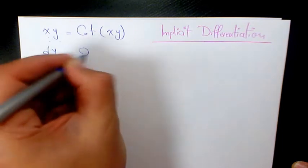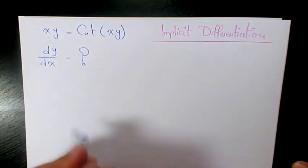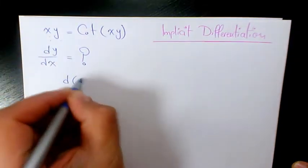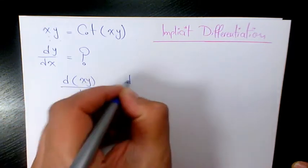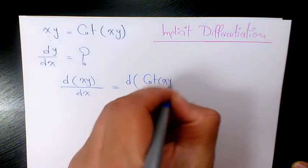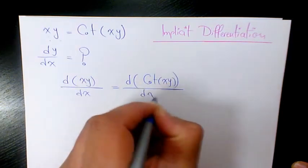To find implicit differentiation, we need to find dy over dx. So it's going to be the derivative of xy over dx equals the derivative of cotangent of xy with respect to x.